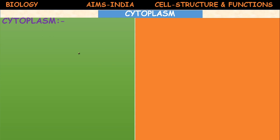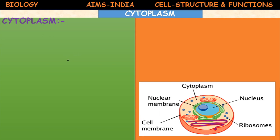Important structure: cytoplasm. The fluid or matrix present inside the cell bounded by the cell membrane is called cytoplasm. Cytoplasm is also called the matrix of the cell. The fluid present inside the nucleus is called nucleoplasm, but the fluid in the rest of the cell is cytoplasm.